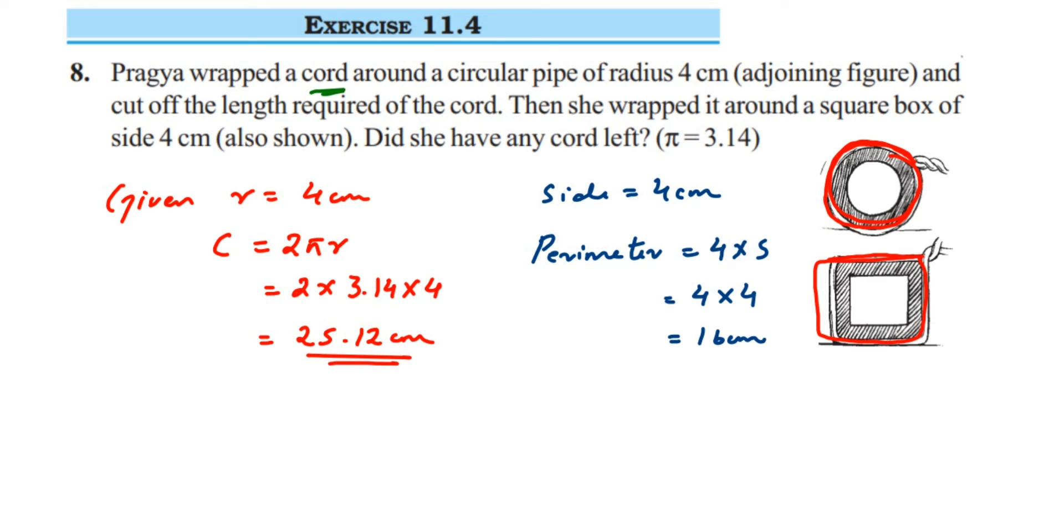So obviously you can see that the cord she used to wrap around the circular pipe was 25.12 centimeters, whereas when she used it for the square shape it was only 16 centimeters, which means the cord is left. Yes, because the cord used for the circular pipe is greater, it's more.